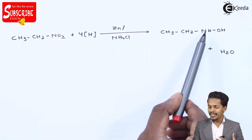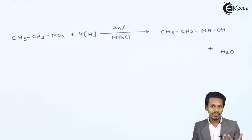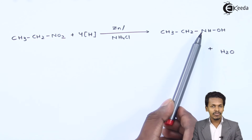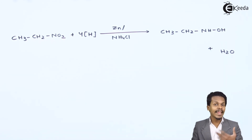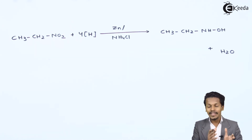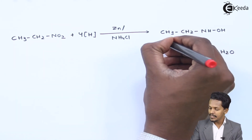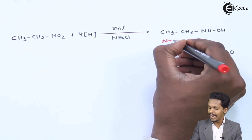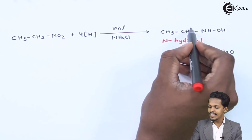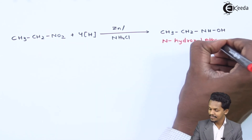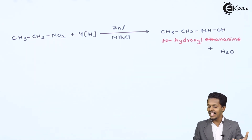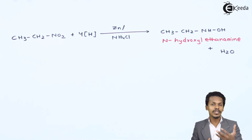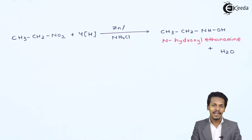In this product, on the nitrogen there is an OH group (hydroxyl group) attached, and also an ethyl (alkyl) group is attached to the nitrogen. Therefore, the name of this compound is N-hydroxylethanamine. This example illustrates the general reaction — converting a nitroalkane into an N-hydroxylalkylamine using zinc and NH4Cl.